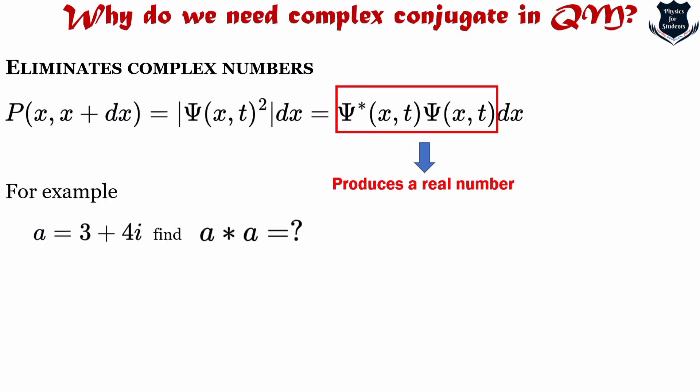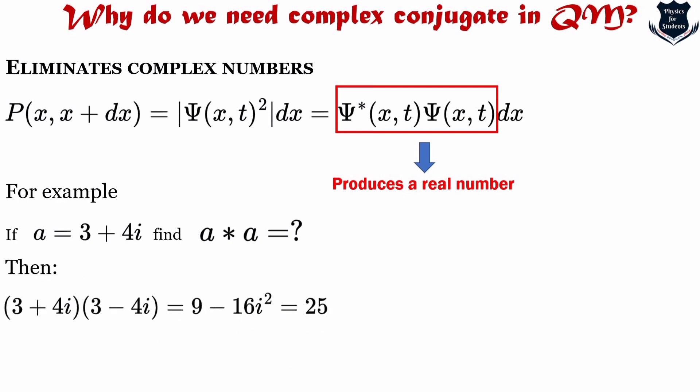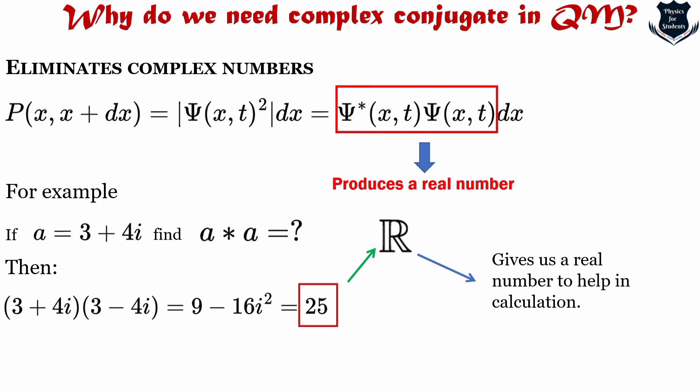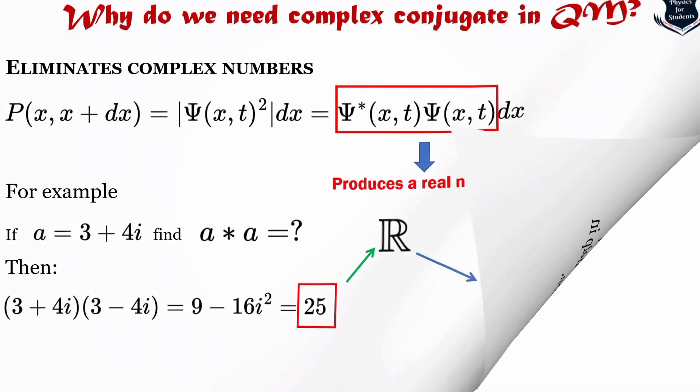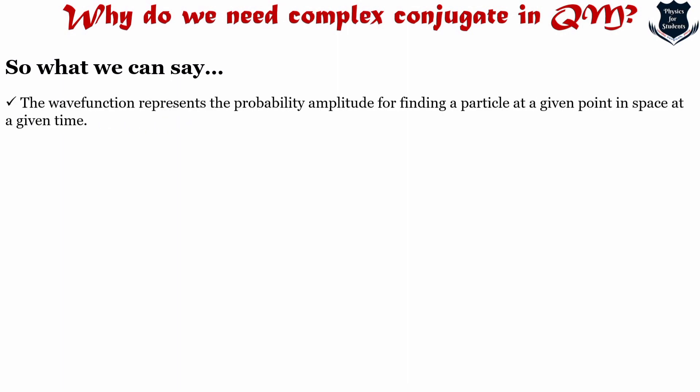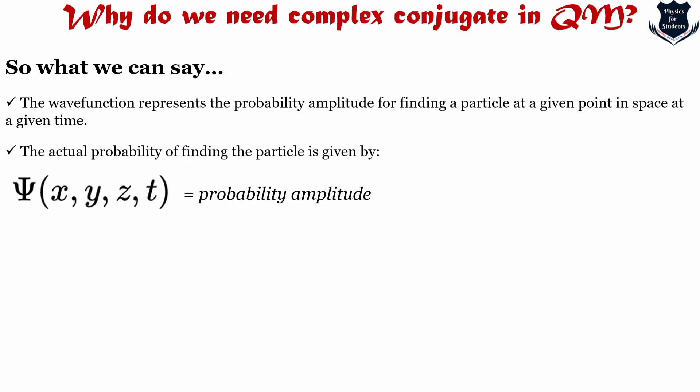For example, using 3 + 4i and its complex conjugate 3 − 4i, the product leads to 25, which is a real number. This makes calculation much simpler. The wave function represents the probability amplitude for finding a particular particle at a given position, and the actual probability of finding the particle is given by the wave function multiplied by its complex conjugate.